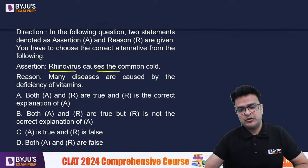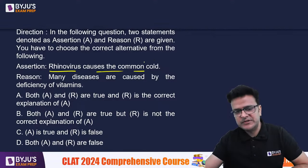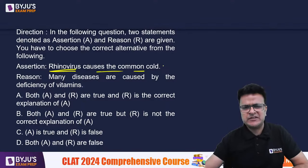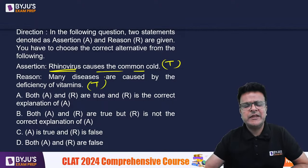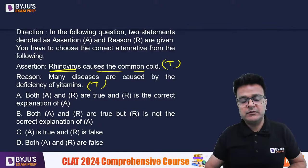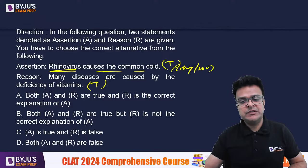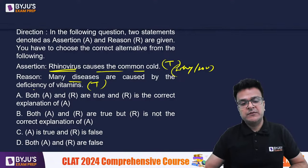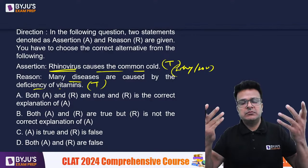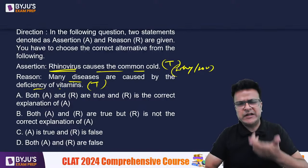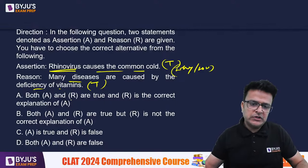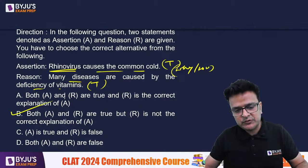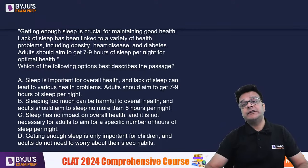Rhino virus causes the common cold — True. Many diseases are caused by the deficiency of vitamins — also True. But if I ask why does rhino virus cause the common cold — because many diseases are caused by vitamin deficiency? There is absolutely no connection. Assertion is saying something, reasoning is saying something else entirely. Both are true but there is no logical explanation. Therefore the correct answer is B, and most of you got it right.